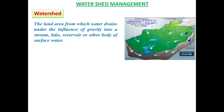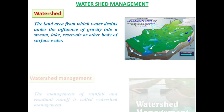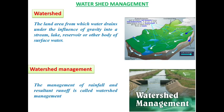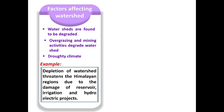Now we are going to the second method of water conservation: watershed management. The word 'watershed' consists of two words — water and shed, where shed refers to a place where something is collected. The land area from which water drains under gravity into a stream, lake, reservoir, or other water bodies is known as a watershed. Watershed management refers to the management of annual rainfall and the resultant runoff.